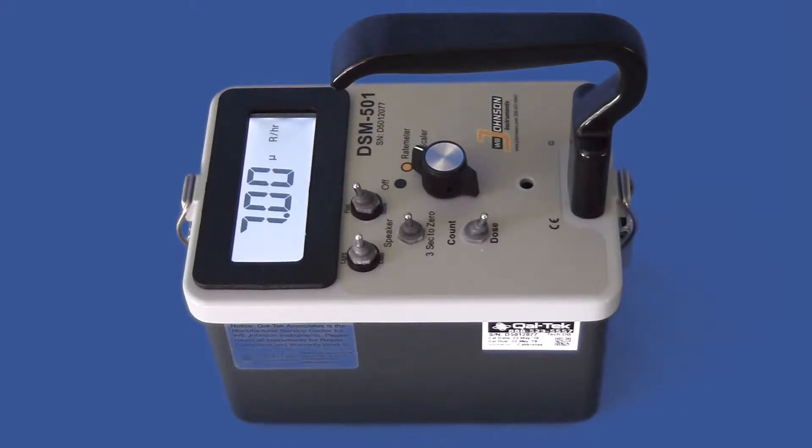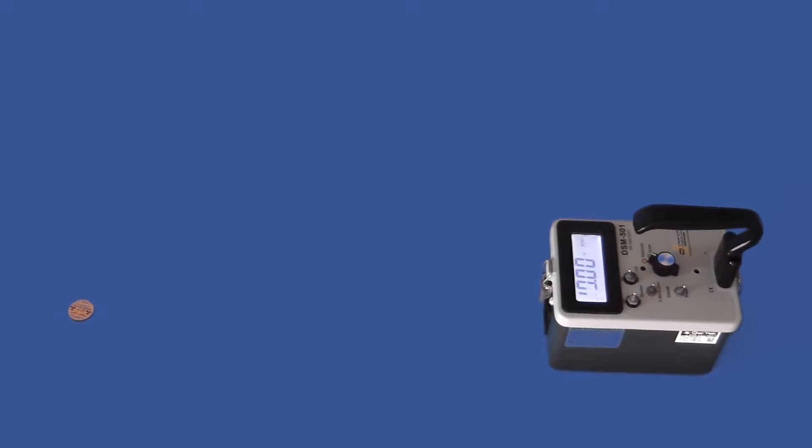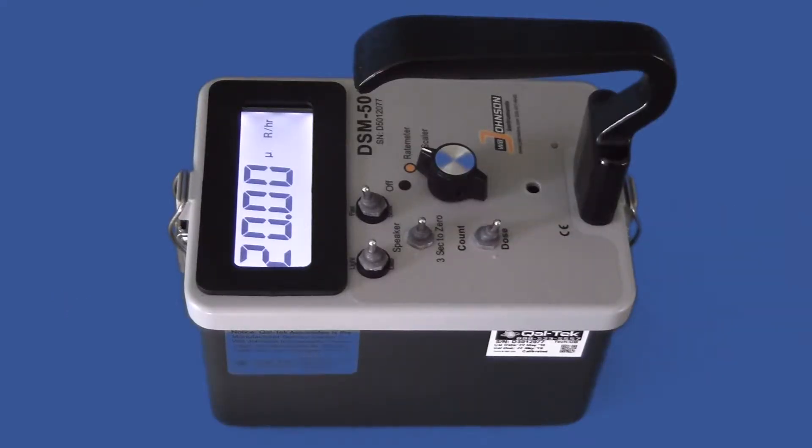At this time, we are detecting background radiation, which appears to be about 6 to 7 microroentgen per hour. We will test the response of the DSM-501 with a 10 microcurie cesium-137 source, spaced at about 2 feet from the detector window. Right now it is reading about 17 to 20 microroentgen per hour.